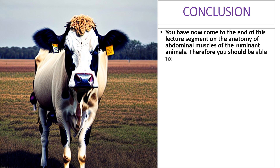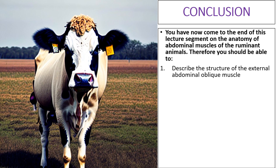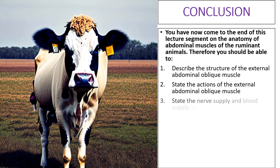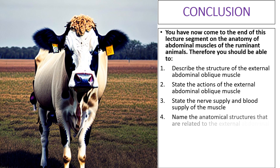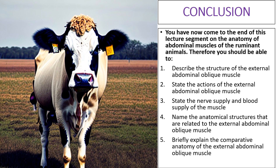You have now come to the end of this lecture segment on the anatomy of the external abdominal oblique muscle of the ruminant animals. Therefore, you should be able to describe the structure of the external abdominal oblique muscle, state its actions, state the nerve supply and blood supply, name the anatomical structures related to it, and briefly explain its comparative anatomy. Thank you for watching and listening.